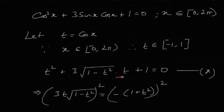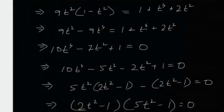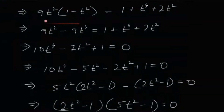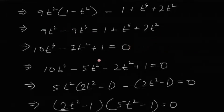Taking that particular term to the LHS and the rest to the RHS, then squaring both sides, it easily follows that this becomes a quadratic in t². So it's very easy to solve — it follows very straightforwardly.